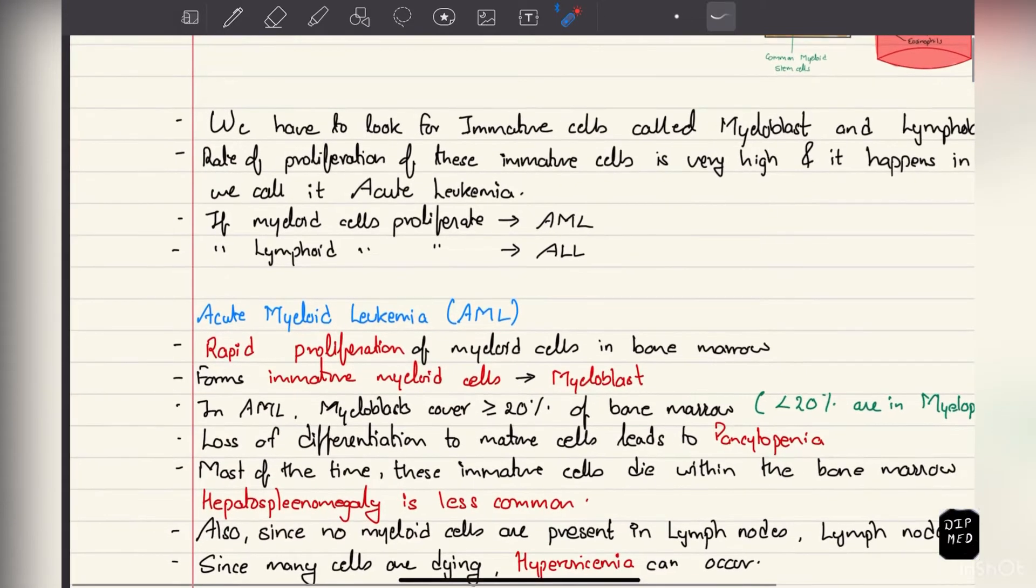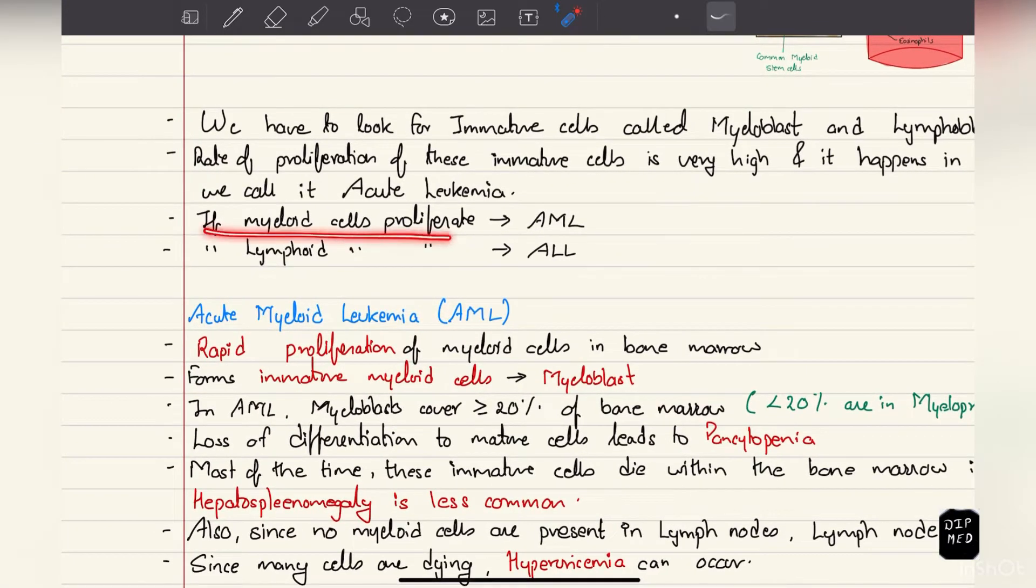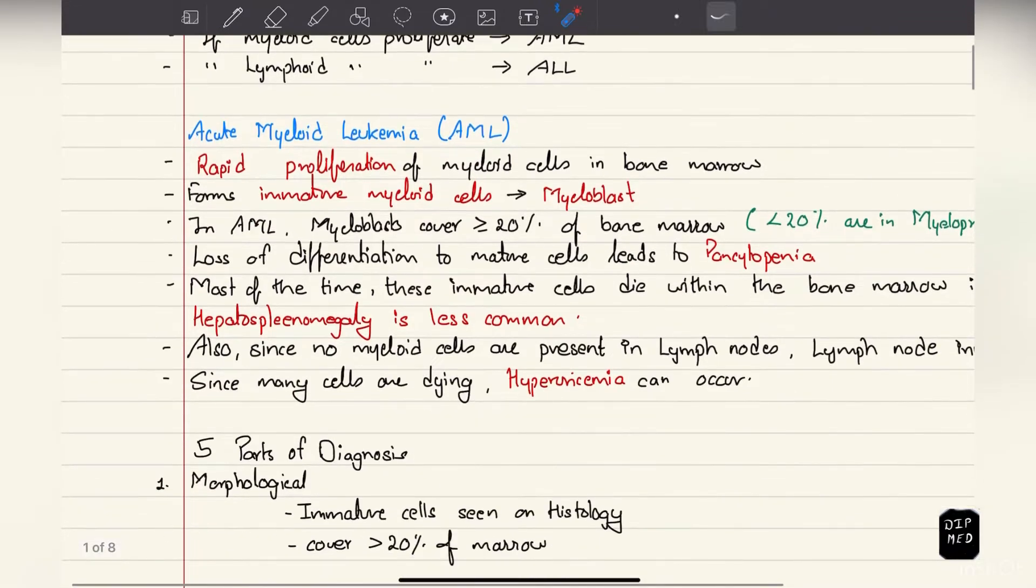If myeloid cells proliferate we call it acute myeloid leukemia, and if lymphoid cells proliferate then acute lymphoblastic leukemia. First let's talk about acute myeloid leukemia.